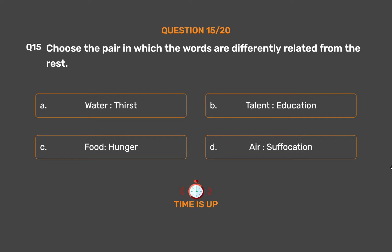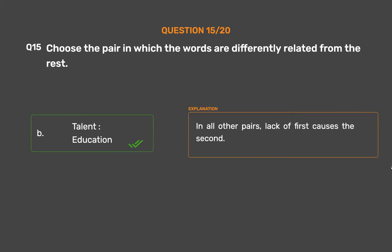The correct answer is Option B: Talent, Education. In all other pairs, lack of the first causes the second.